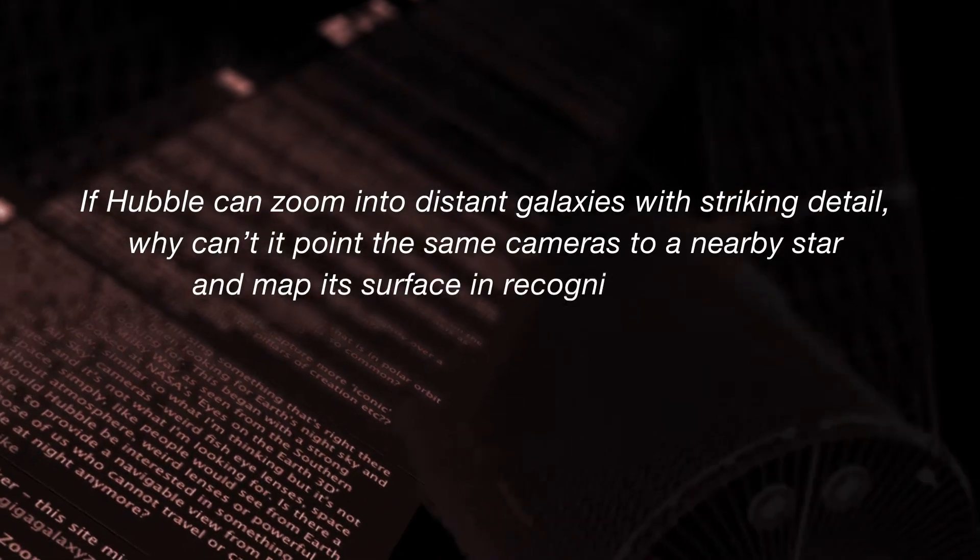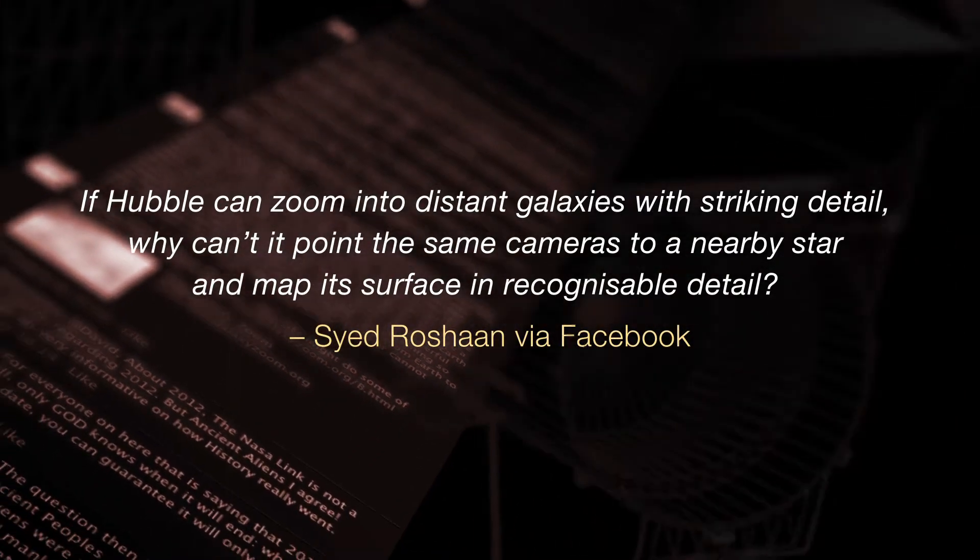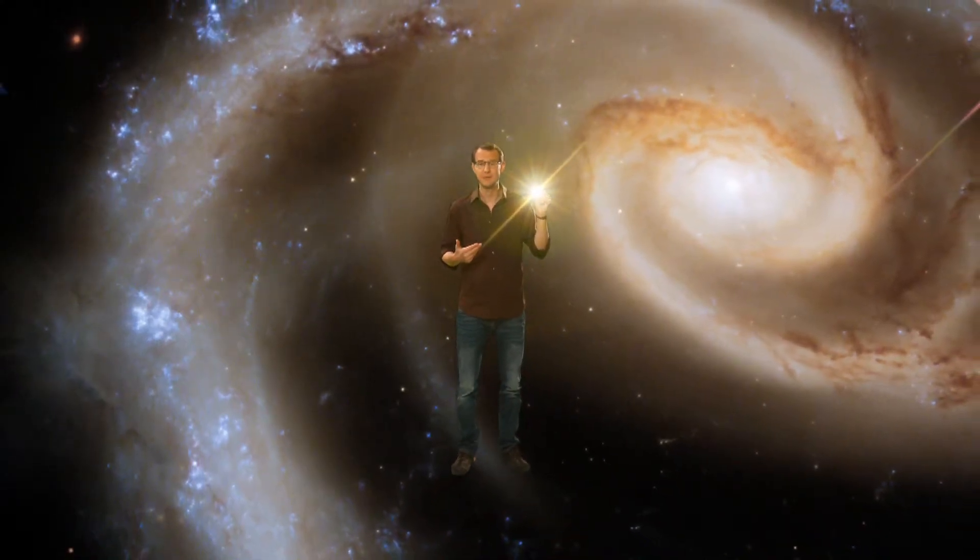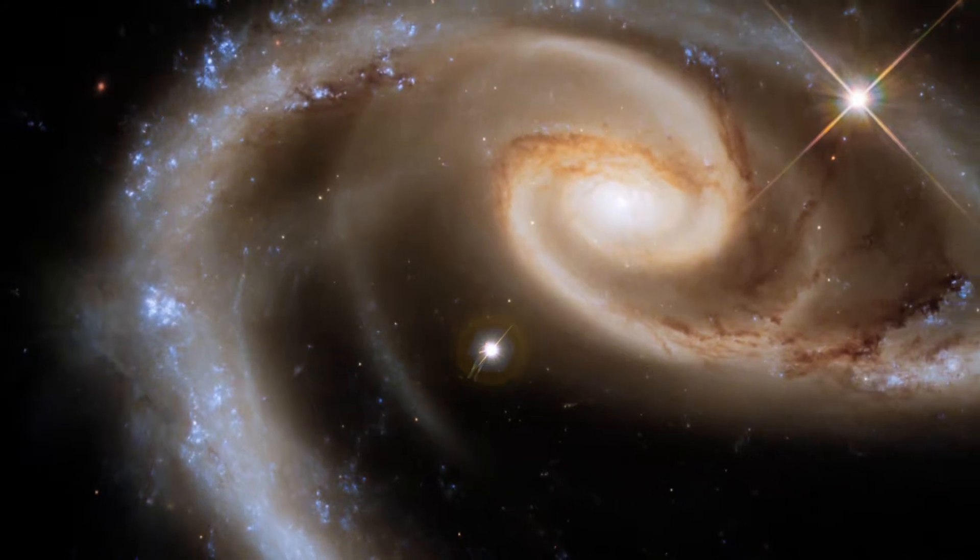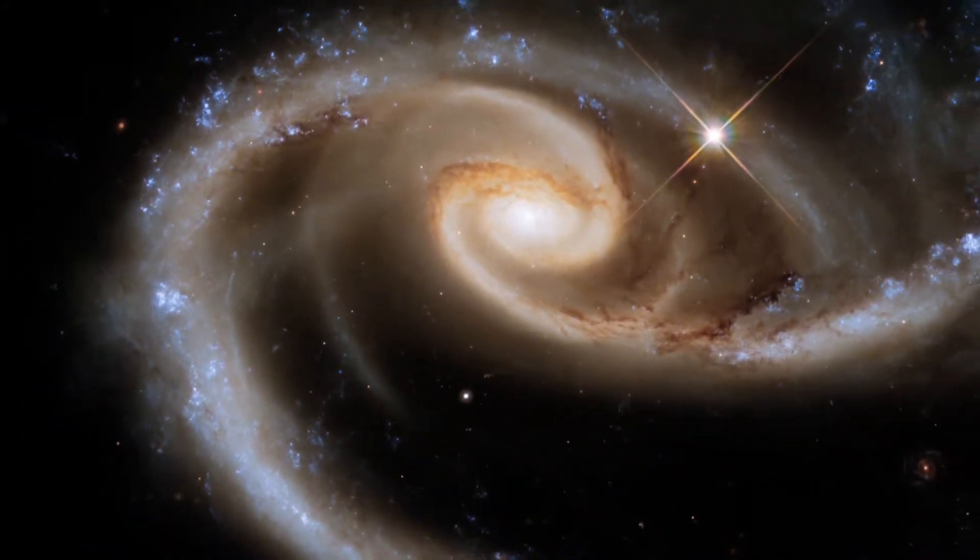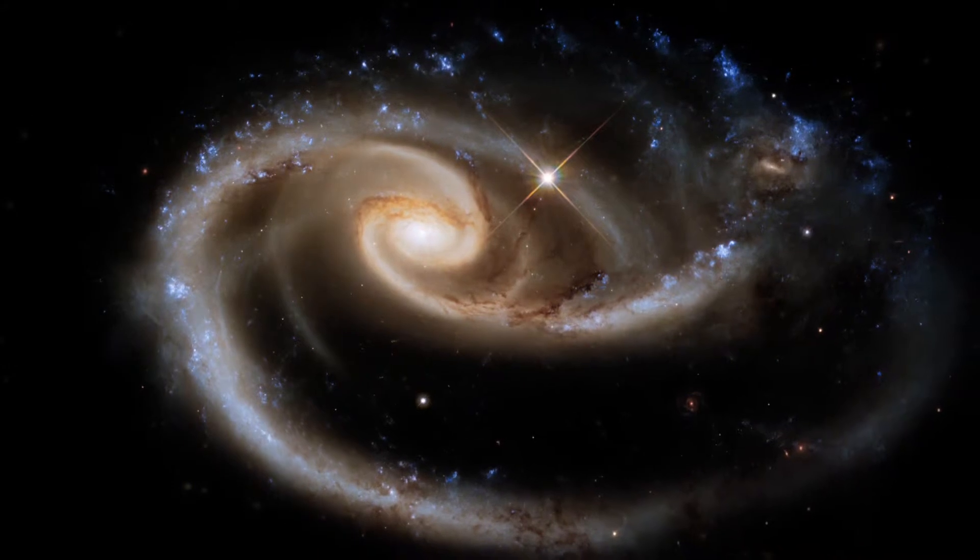If Hubble can zoom into distant galaxies with striking detail, why can't it point the same cameras to a nearby star and map its surface in recognizable detail? This is the star Betelgeuse. It's a very big star and it's quite close to us, only a few hundred light-years away. This is the galaxy Arp 273, which is about 500,000 times farther away than Betelgeuse. But at the same time, it's about a billion times bigger. Which means that its apparent size on the sky is still about 2,000 times larger than that of Betelgeuse. Although stars are very close to us, they're just too small, so that being able to see the details on the surface of a star is beyond the capabilities even of Hubble.